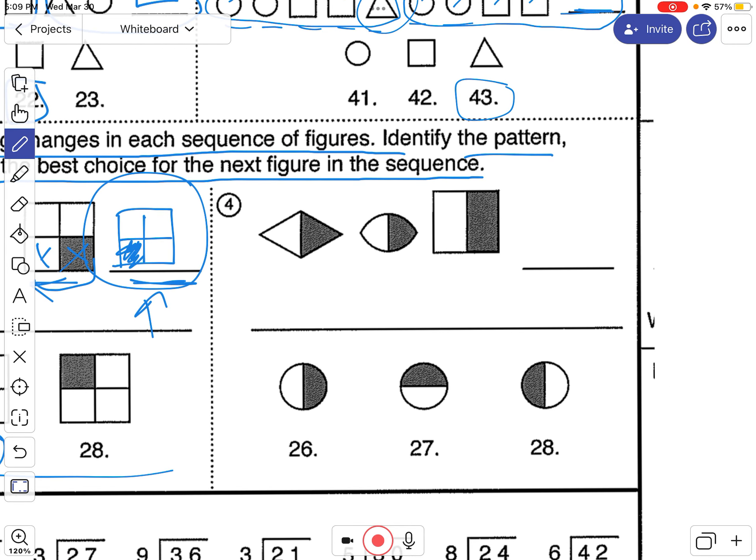Now you're going to try this one here. You might want to look at the choices down here to know what you're going to draw there. Go ahead and pause the video. Try that one out. All right. So you should have already done this. We have a diamond with the right side shaded.